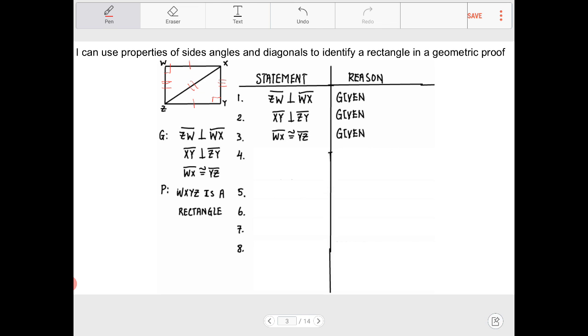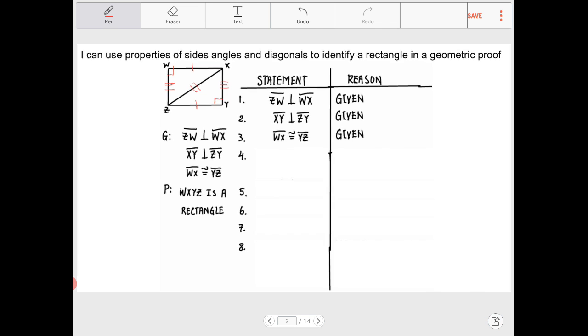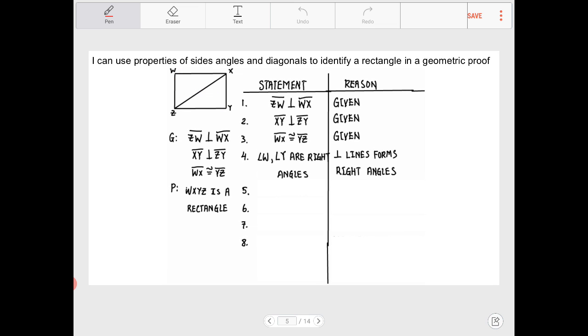So let's take a look, so for line four, one of the first things that we can do is to suggest that angle W and angle Y are in fact right angles. That was one of the first things that we had done, we established that those right angles, those perpendiculars will form right angles, and the reason is perpendicular lines form right angles.